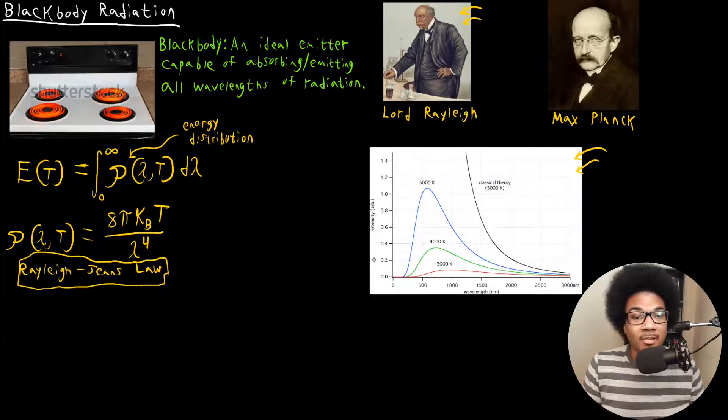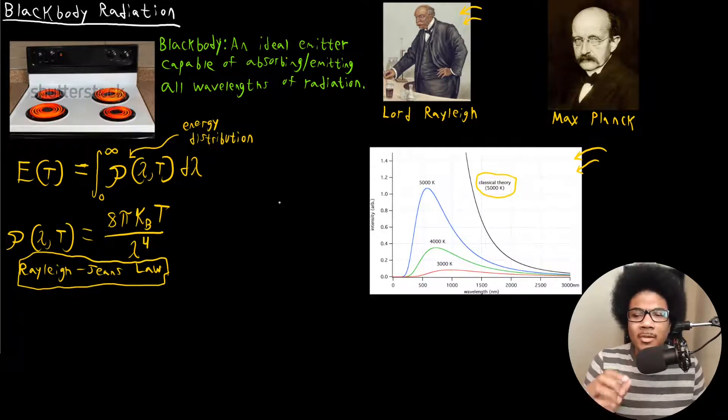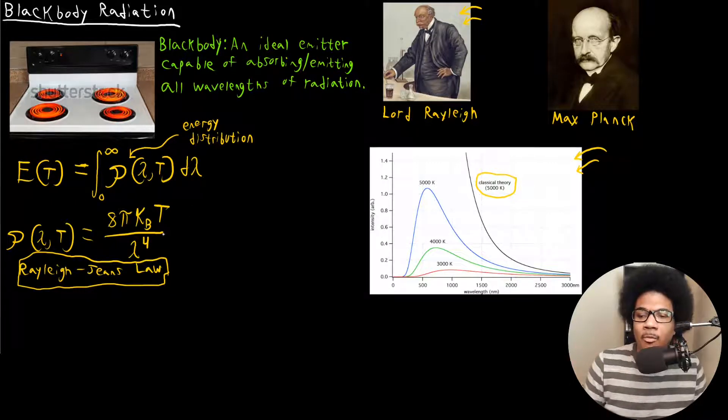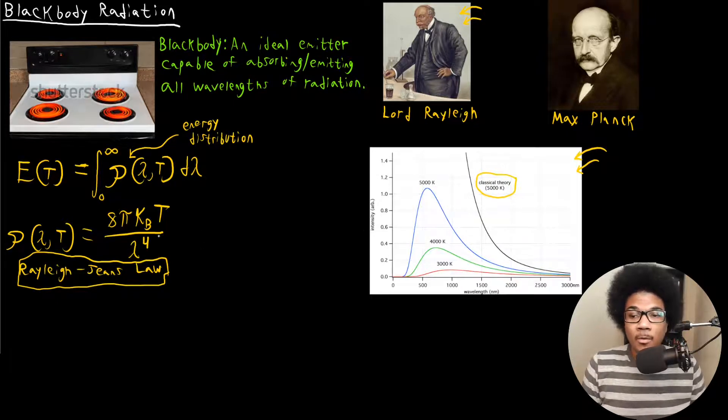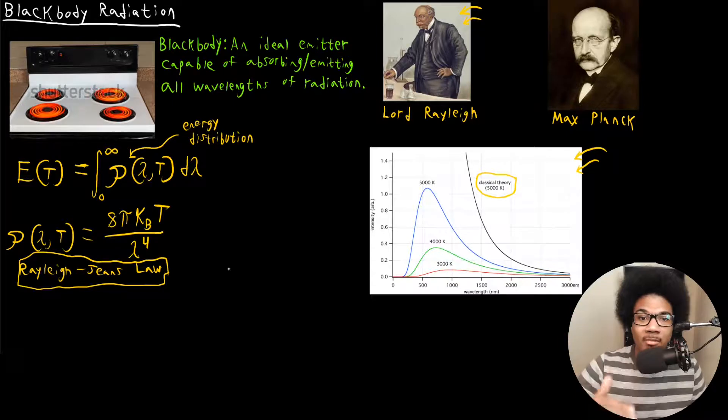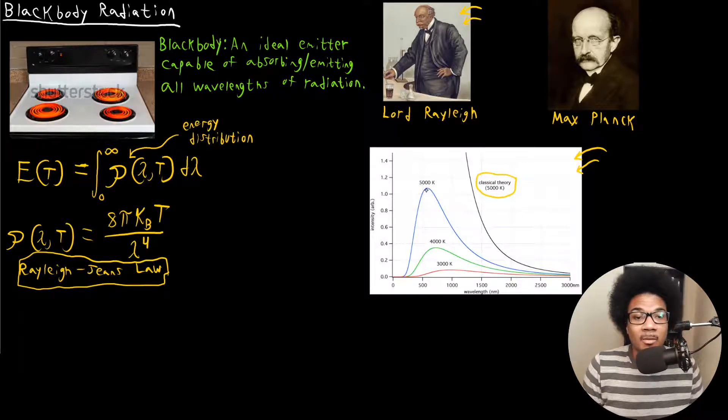How does the Rayleigh-Jeans law do? We can see here, this curve that says classical theory at 5,000 Kelvin, that's the Rayleigh-Jeans law. You can see that it just tails off to infinity as it gets close to that UV visible region. Why does this happen? You can actually make an argument of this based purely on the mathematics of the Rayleigh-Jeans law. You see that this denominator depends on lambda to the 4th. If you look at this distribution, as the wavelength starts to get smaller and smaller as it does in the UV invisible region, this distribution just starts to blow up. The intensity just tails off to infinity and you don't get this peak and then return back to zero like you get in the experimental data.